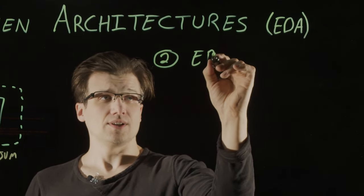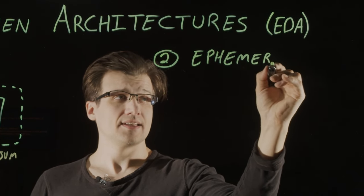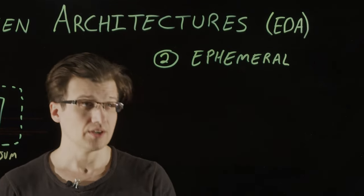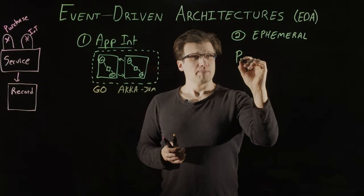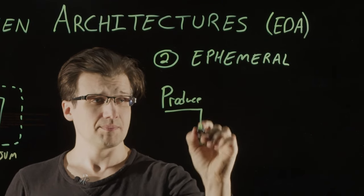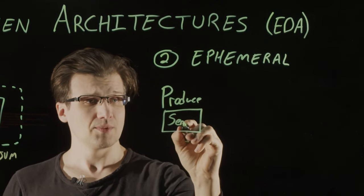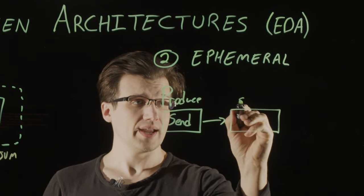The second type that we're going to look at is what we call ephemeral. And ephemeral means that it is temporary. It's not durably retained. So with ephemeral messaging, we're going to produce a record. And this is typically done by an element that we call a sender. And the sender writes the record into a subject.